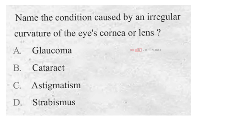Name the condition caused by an irregular curvature of the eye's cornea or lens. A. Glaucoma, B. Cataract, C. Astigmatism, D. Strabismus. And the correct answer is...